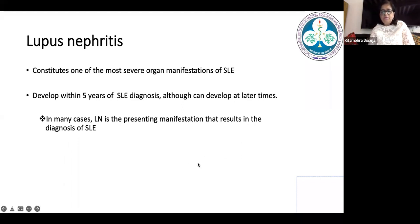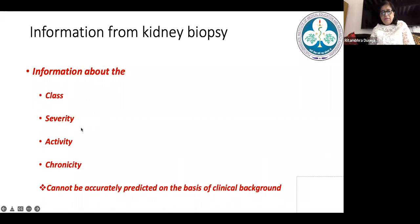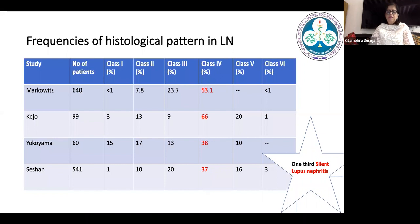Lupus nephritis is one of the manifestations of SLE and sometimes it may be the first presentation. As nephropathologists, we try to give as much information from the kidney biopsy as possible. Our aims when interpreting biopsies are: to assess the class of lupus nephritis — there are about six classes — the severity in terms of both active and chronic lesions. Sometimes clinical and pathological findings do not correlate; there may be discrepancies where the presentation may not be nephritic but we show proliferative lesions on biopsy.